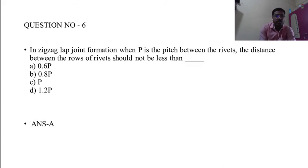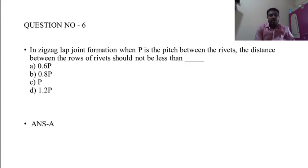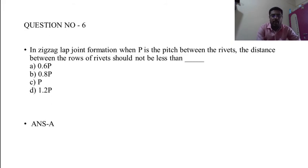Question 6: In a zigzag lap joint formation, when P is the pitch between the rivets, the distance between the rows of rivets should not be less than — A) 0.6P, B) 0.8P, C) P, D) 1.2P. The correct answer is A: 0.6 times P.